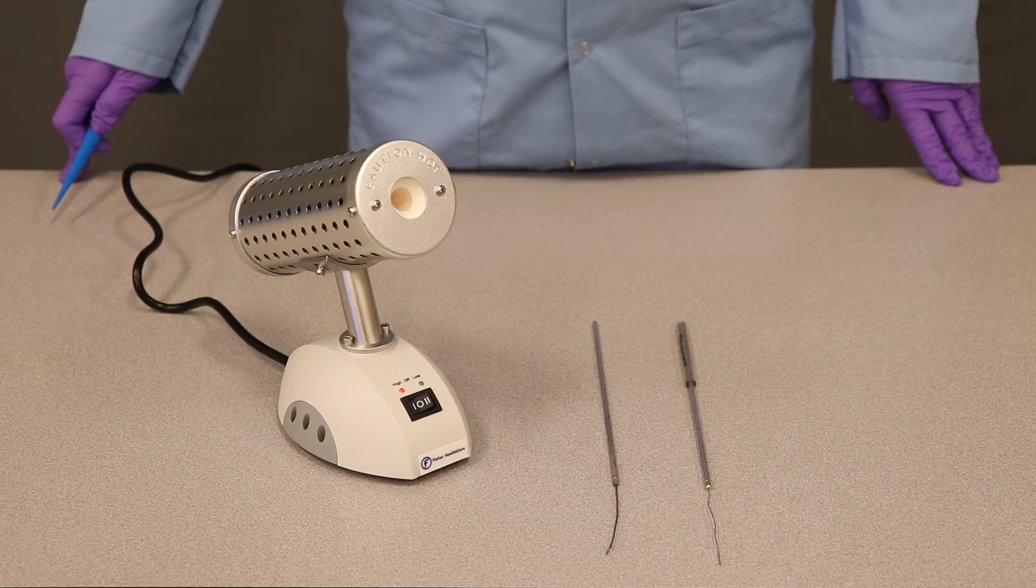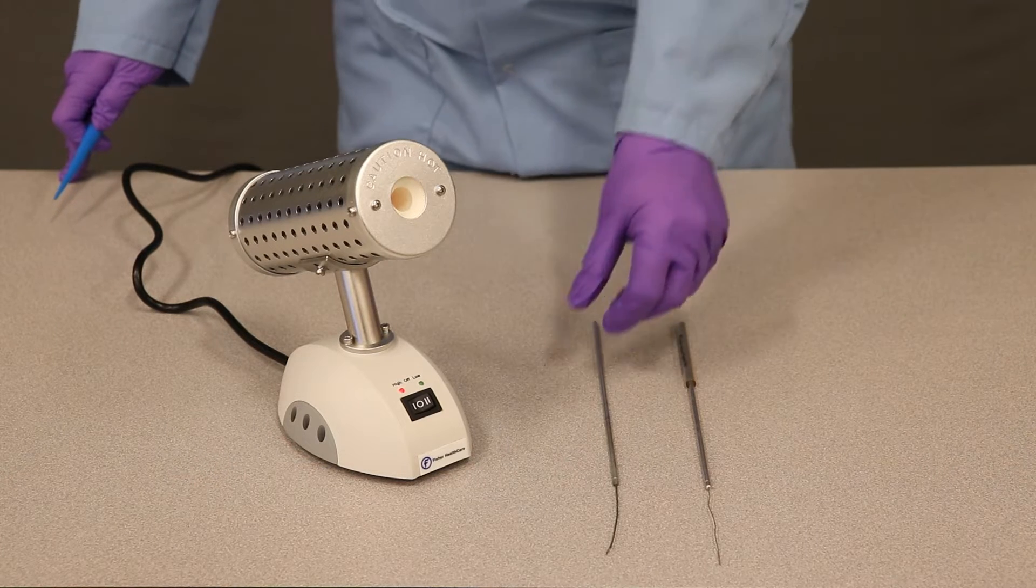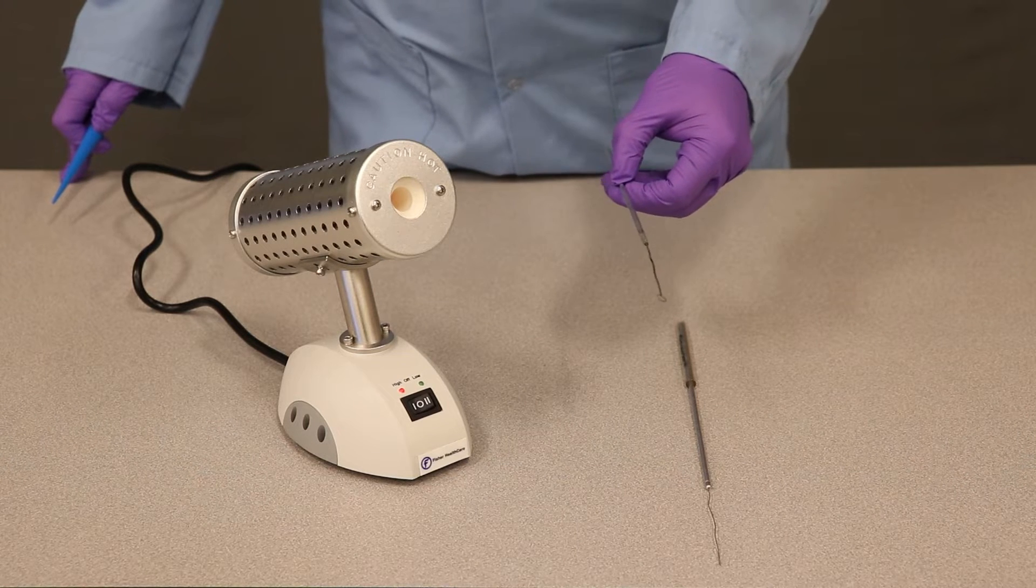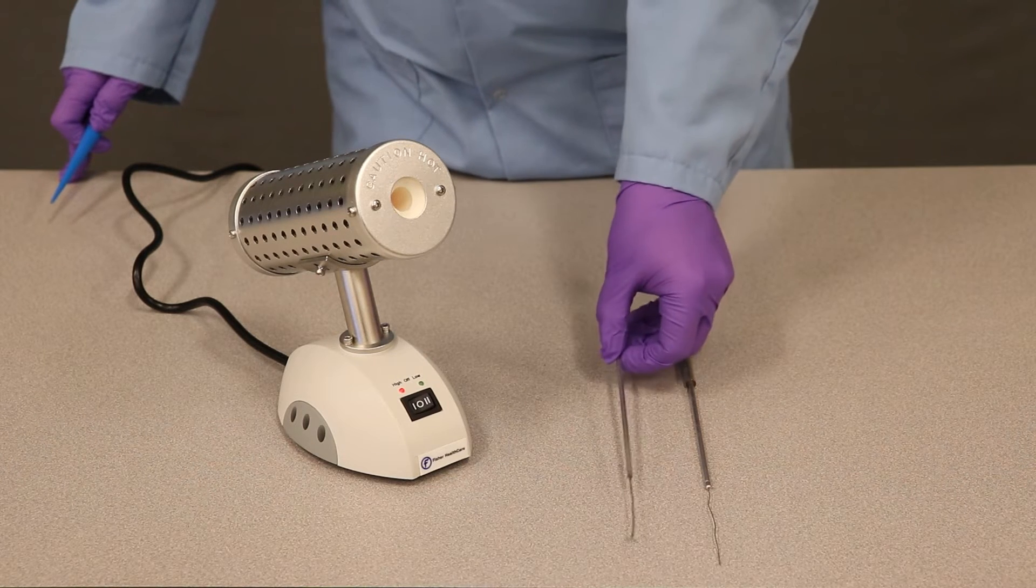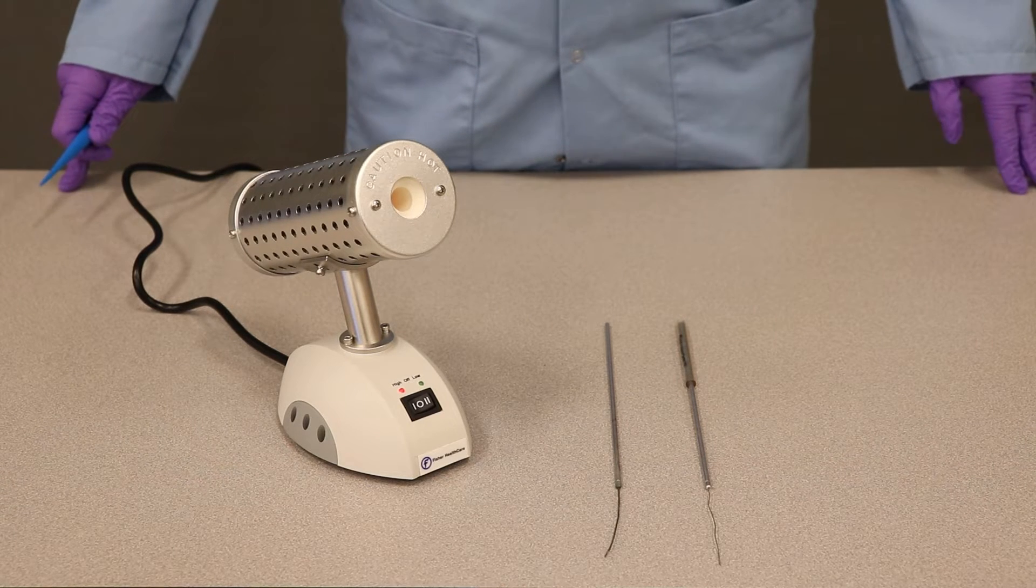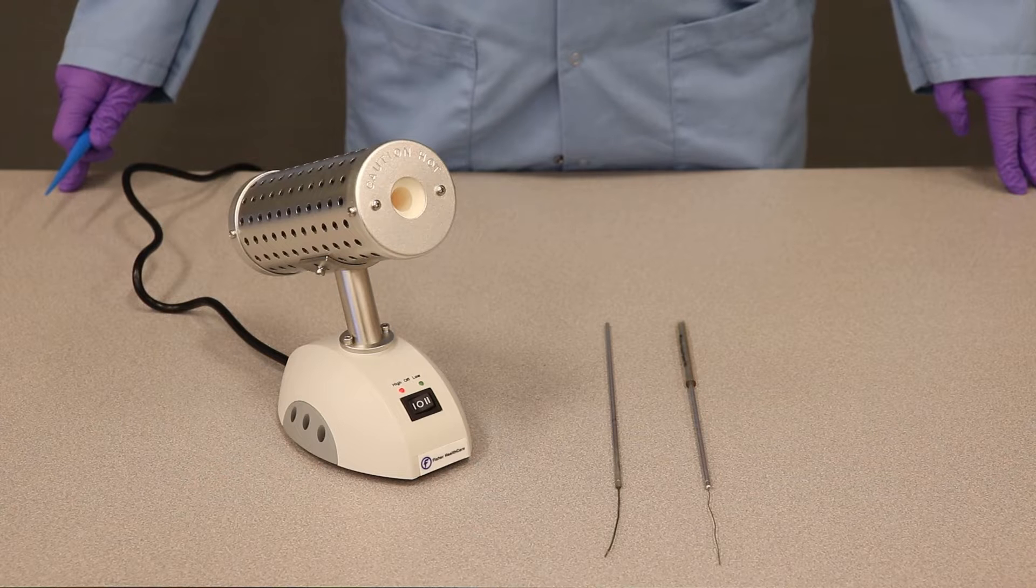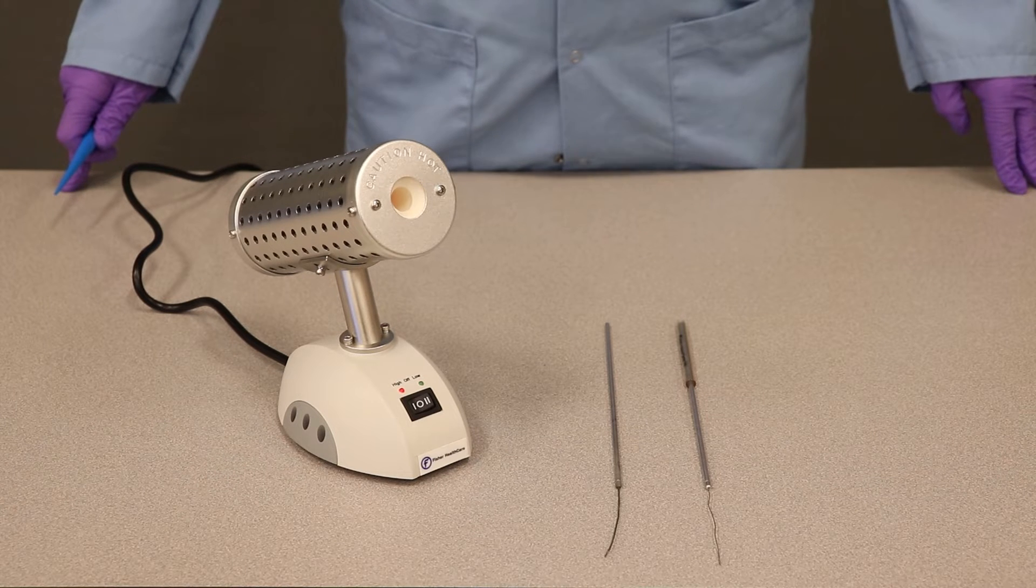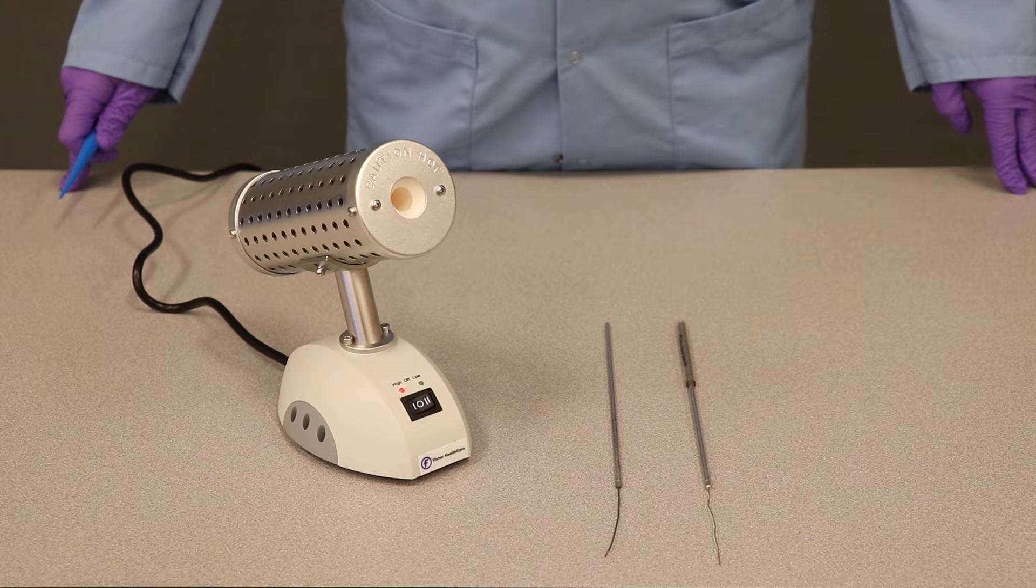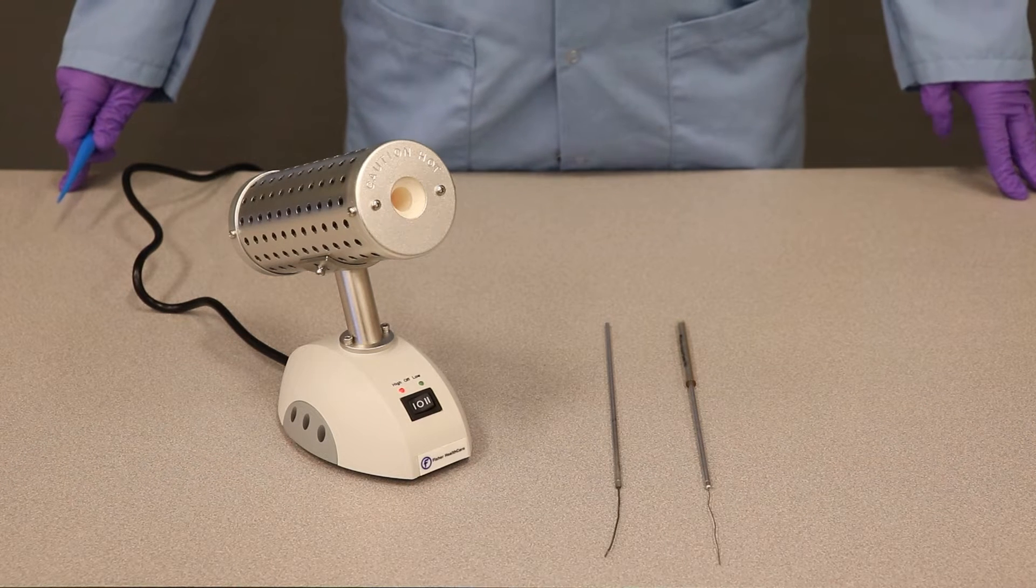Bact incinerators are a tool we can use to sterilize loops and needles for microbiological inoculations. We use Bact incinerators in cases where we cannot use a Bunsen burner, like in rooms where there are no gas outlets, or inside biosafety cabinets where the airflow would knock out the flame of a Bunsen burner.